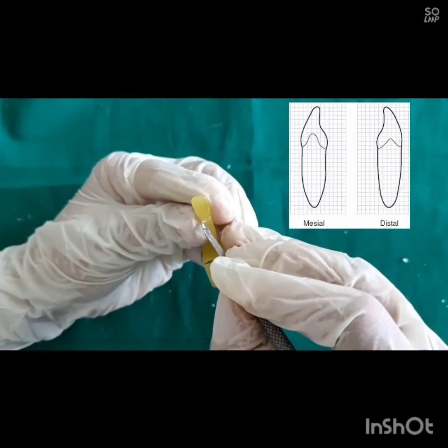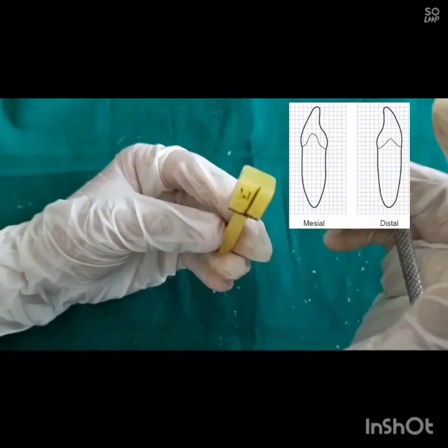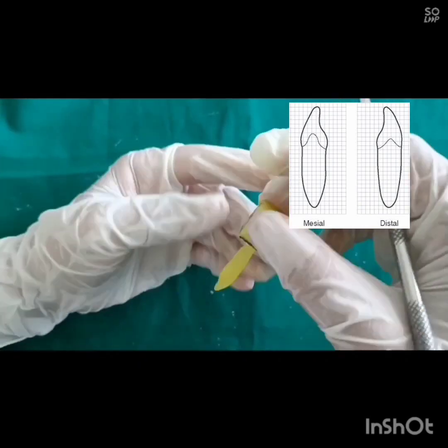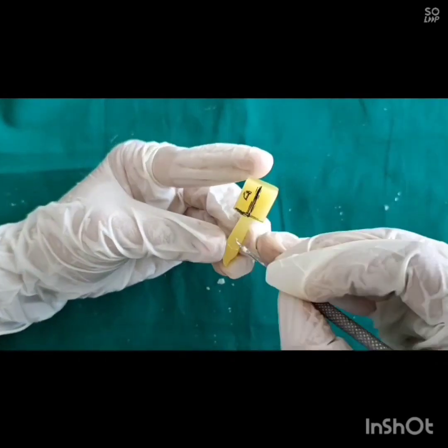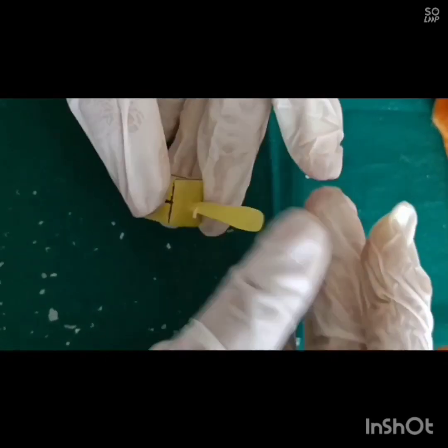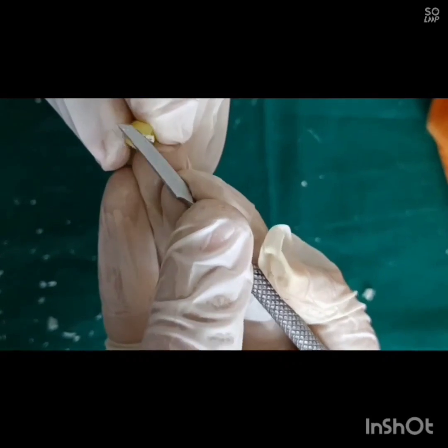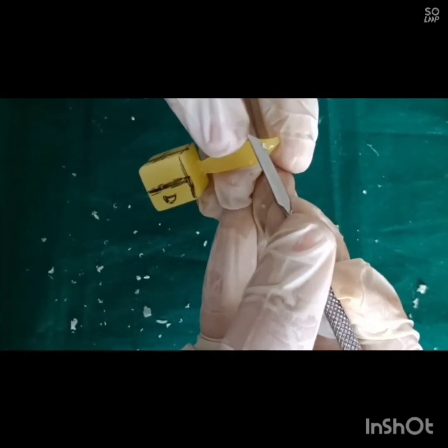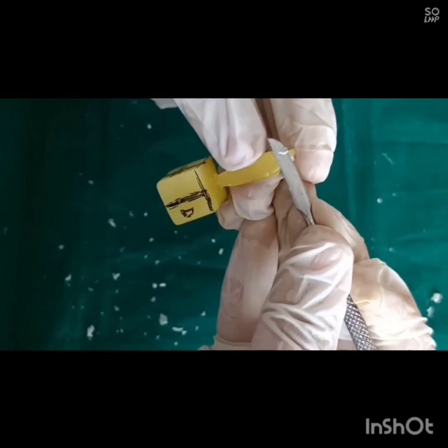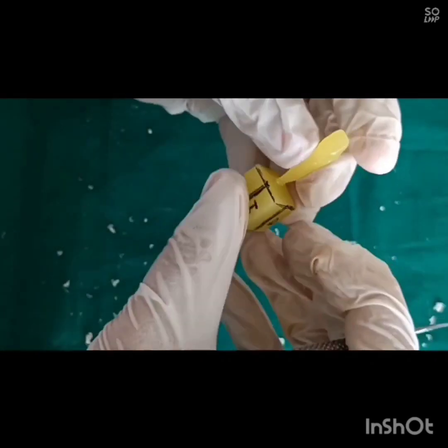Cervical line on mesial and distal surfaces convex incisally. The mandibular central incisor is bilaterally symmetrical, so the incisal surface of crown meets mesial and distal side at 90 degrees, i.e. it will be sharp.